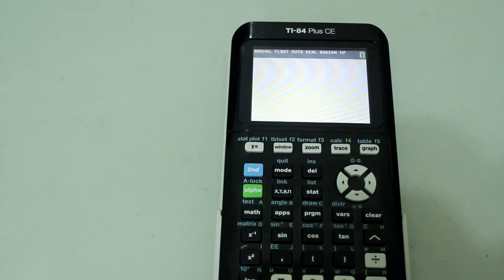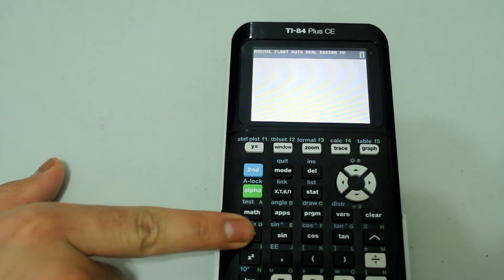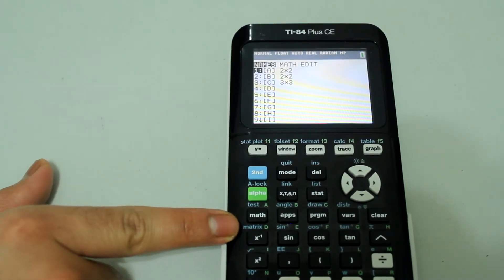Without further ado, let's get started. In order to find the inverse of a matrix, first go to the matrix menu by pressing 2nd, the X to the negative 1 button that selects the matrix options.